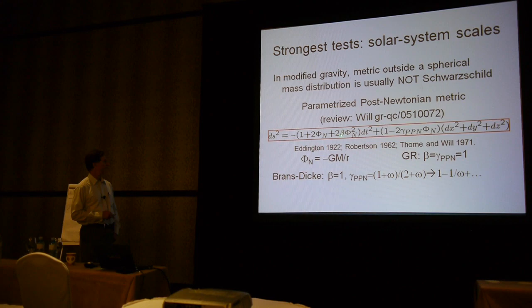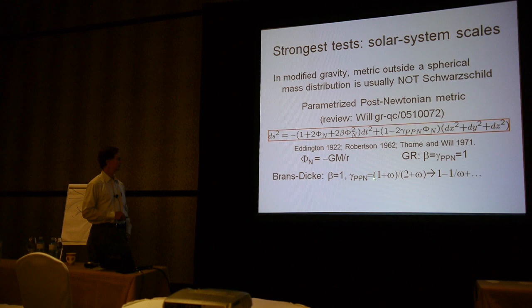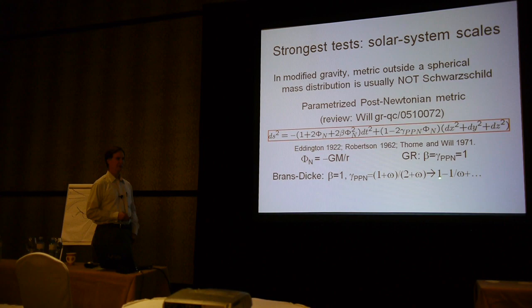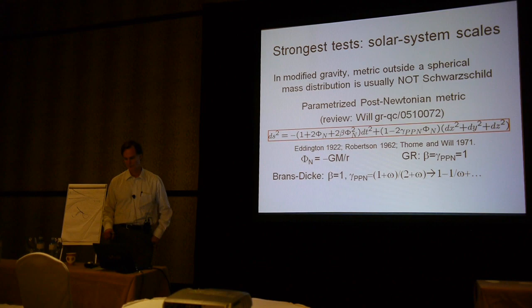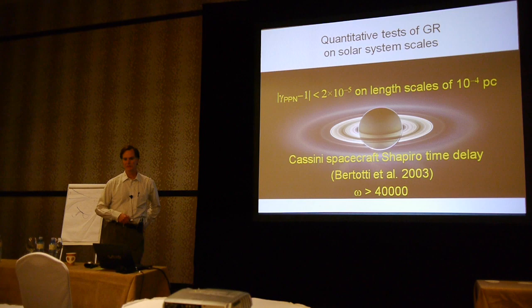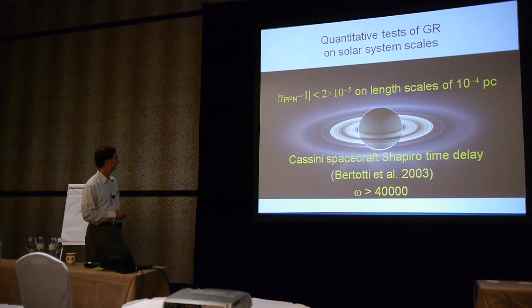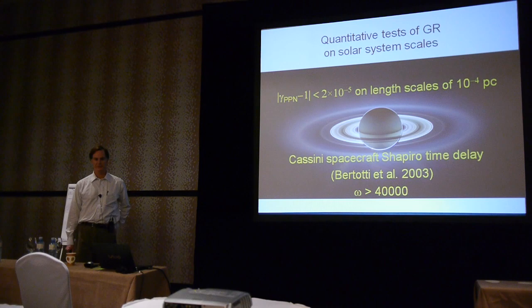In alternative theories—scalar-tensor theories, for example—some may have the non-linear coefficient equal to one but the PPN parameter differing from one. The Brans-Dicke theory is a canonical scalar-tensor theory with parameter ω, and the general relativity limit is when ω becomes large; the first correction is 1/ω. This has been tested in the solar system to high precision and also using binary pulsars. The difference of the PPN parameter from one is less than 2×10⁻⁵, owing to the ranging of the Cassini spacecraft—a measurement of the Shapiro time delay.